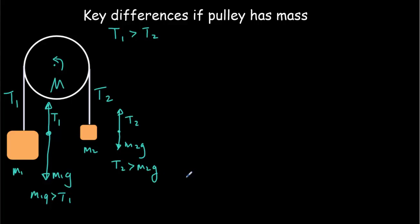And this time, instead of two equations, we're going to have three equations. We'll have the two linear equations where we use F net equals Ma, and then we're going to have a rotational equation as well. So let's do the two linear equations.